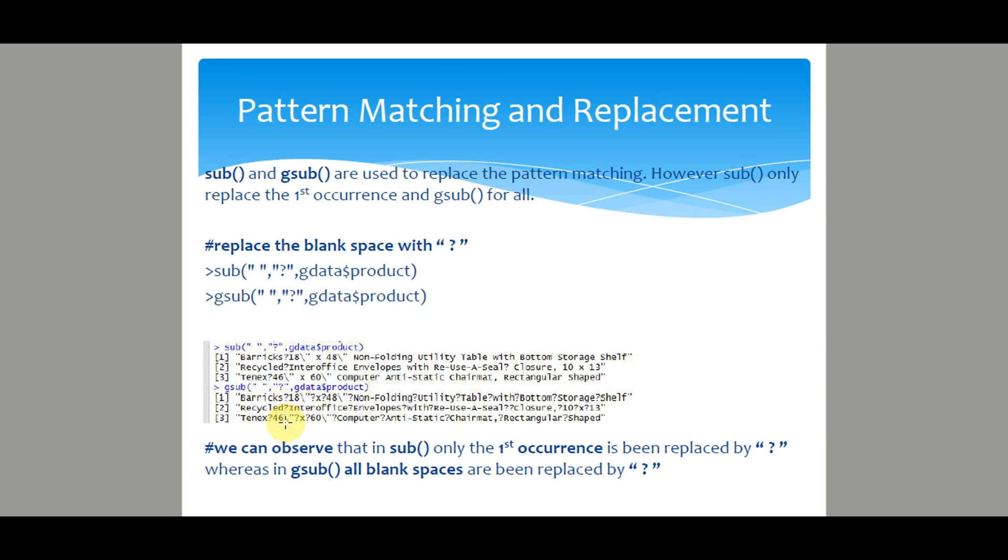In sub, we will see after the product name, the first space is replaced by question mark. Then the spaces after that are not being replaced by question mark. While in gsub, we can see all the blank spaces are replaced by question mark.